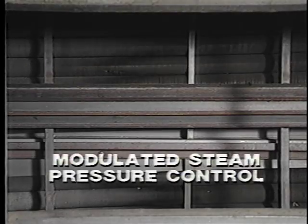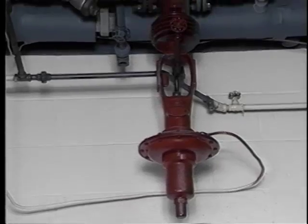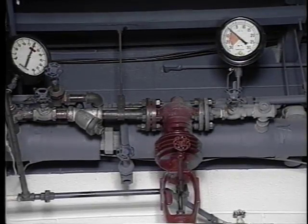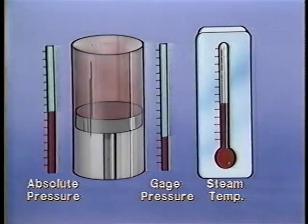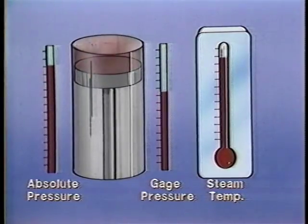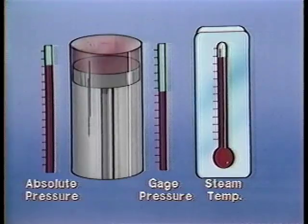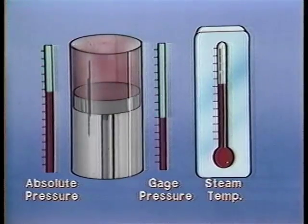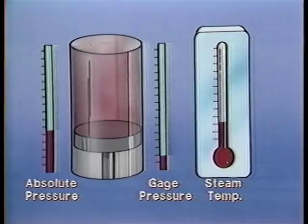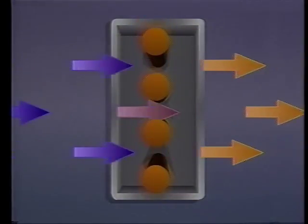The second method, the modulated steam system, uses a remotely operated steam control valve to vary the steam pressure to the coil, taking advantage of the fact that a specific steam pressure always yields a precise steam temperature. Throttling the control valve reduces the steam pressure and therefore the steam temperature in the coil, resulting in the transfer of less heat to the passing airstream.